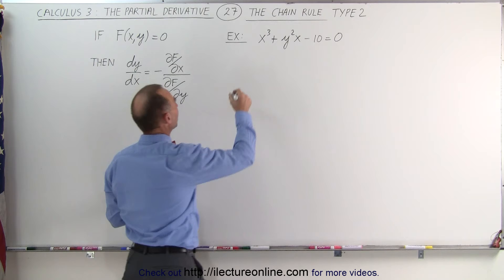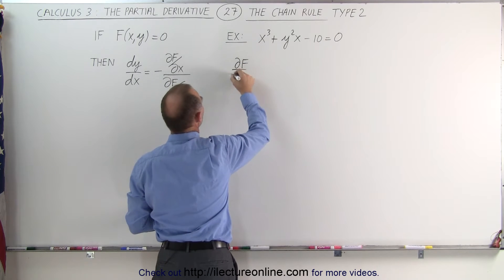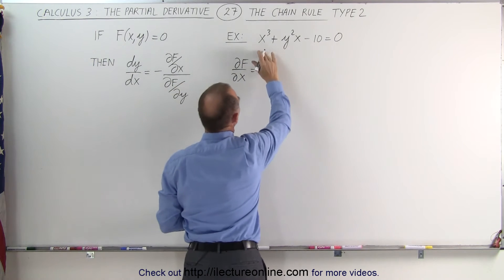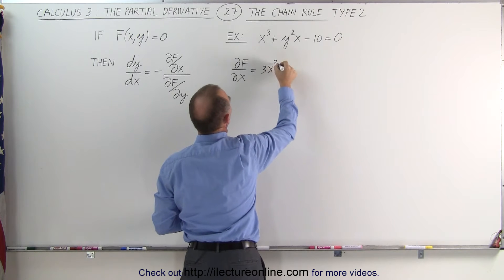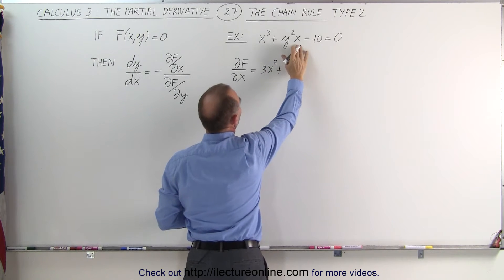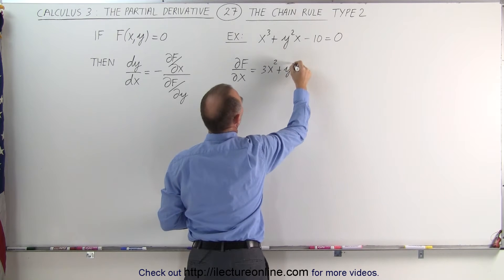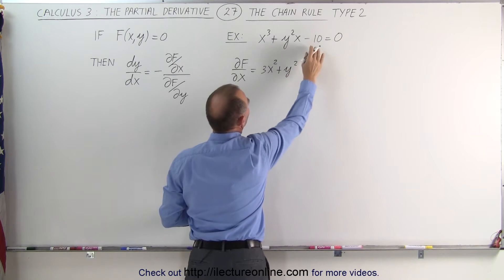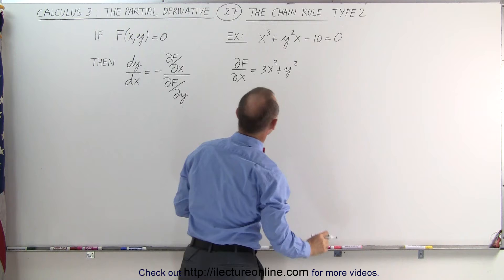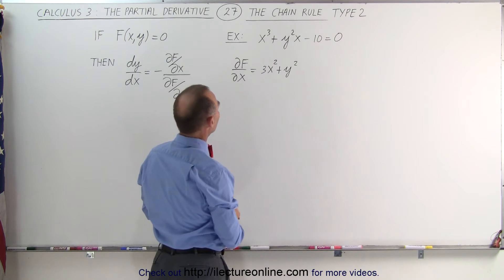Let's try that with our example. We're going to first find the partial derivative of the function with respect to x. That is going to be equal to 3x squared plus — here x is the variable and y is the constant — so we get y squared.